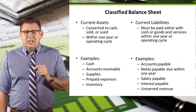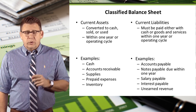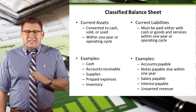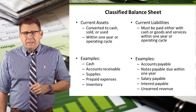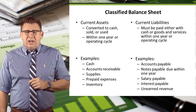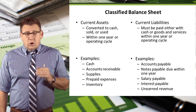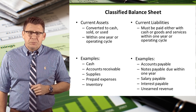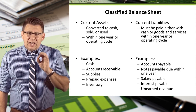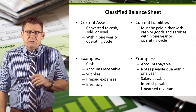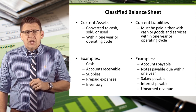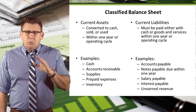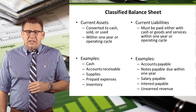Assets that will be turned to cash, sold, or used within one year or one operating cycle, whichever is more, are classified as current assets. Liabilities that will be paid within one year or one operating cycle, whichever is more, are classified as current liabilities. We will define operating cycle in a future video, but almost all companies have many operating cycles within one year, so the year is basically the cutoff.